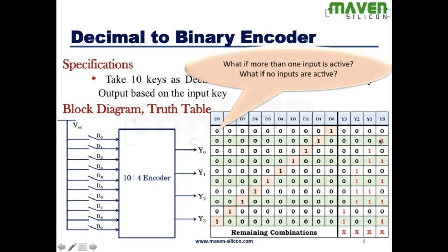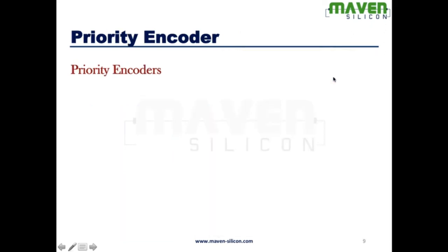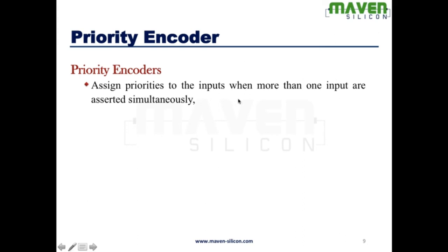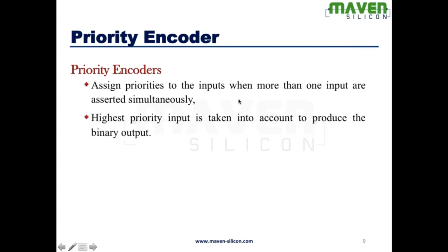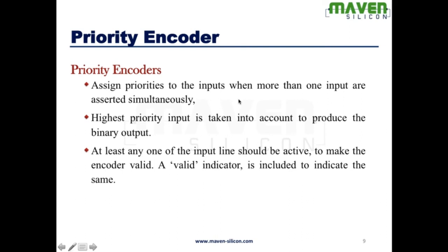Now I'd like to ask some questions: What if more than one input is active? What would happen? What if none of the inputs are active? That's where the priority encoder comes into picture. It assigns priorities to the inputs when more than one input is active high. The highest priority input will always be considered to produce the output, and at least one input line should be active to make the encoder valid.